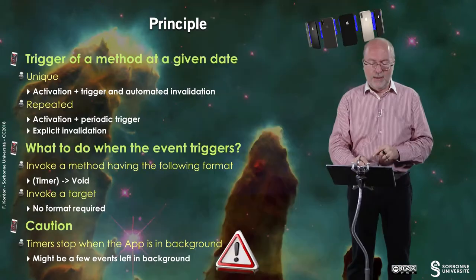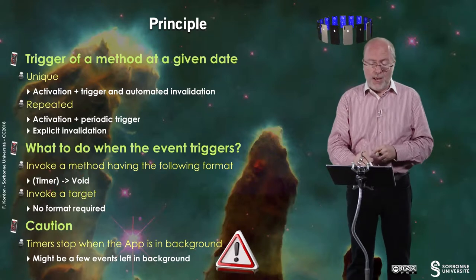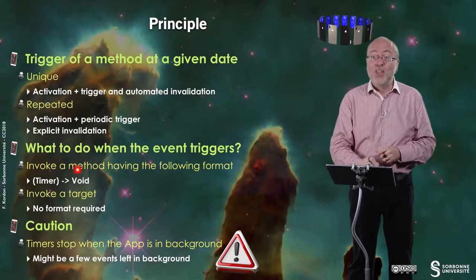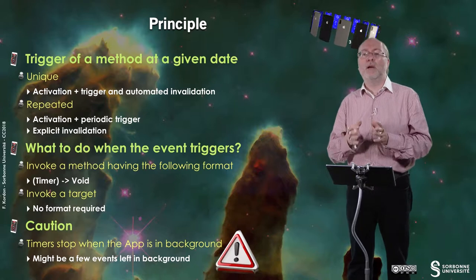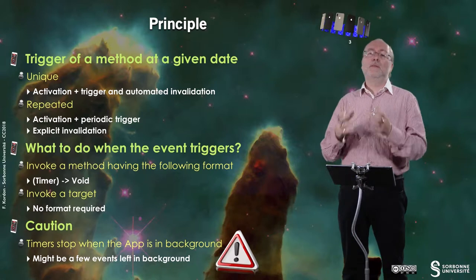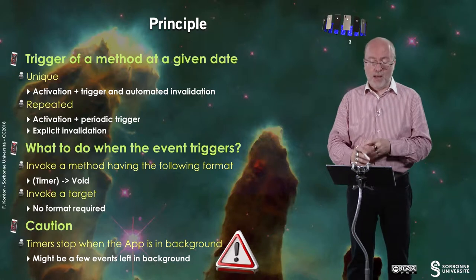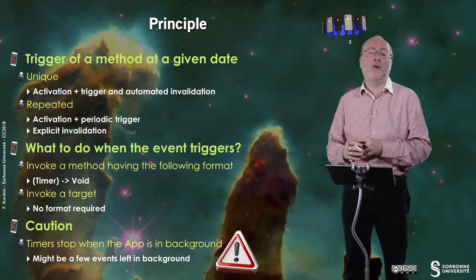When you want to trigger an event, you basically invoke a method. You can put this method inline — it's a sort of handler, not a completion, it's a handler. This handler should have a specific profile, this prototype: it passes you a timer and returns nothing. Or you can invoke a target declared in a more classical way, and then no specific format is required, even though this is the preferred format.